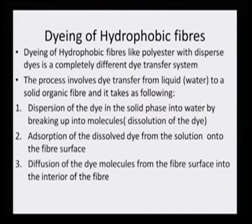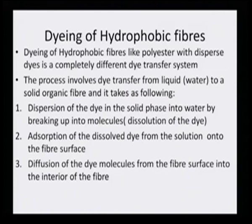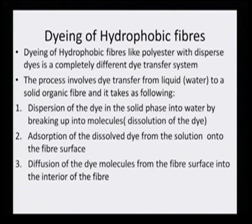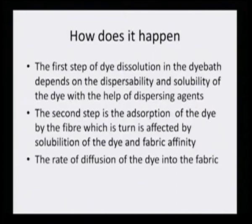The dissolution is more like forming a kind of colloidal solution. Adsorption of the dissolved dye from the solution onto the fiber, and diffusion of the dye molecules from the fiber surface into the interior of the fiber — three things happen when polyesters are dyed with dispersed dye. The dye, first taken as a powder or solid, is dissolved in water; this dissolution is not complete, there is an equilibrium. How does it happen?